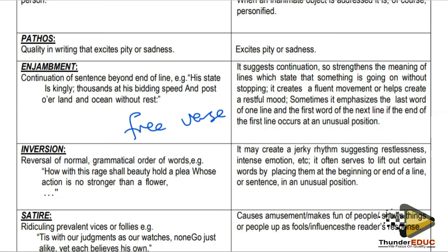When we have free-verse poems with no regularity in structure, we get a lot of enjambment. Inversion is the reversal of normal grammatical order of words — for example, 'How with this rage shall beauty hold a plea, whose action is no stronger than a flower?' Shakespearean language is usually our reversal anyway. The word order is wrong, creating something grammatically different. That reversal of grammar and word order is what we call inversion.